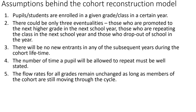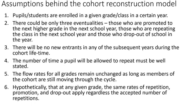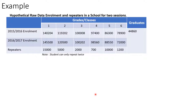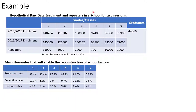The final assumption is that the flow rates for all grades remain unchanged. The flow rates are the percentages at which students are being promoted, repeating, or dropping out, and these rates of repetition or dropout — subject to the accepted maximum number of repetitions — are held constant. With these assumptions in place, we can work out the rates from the data provided.